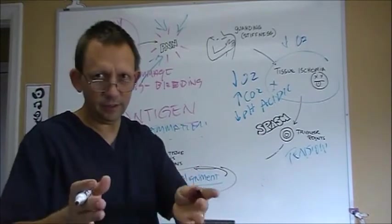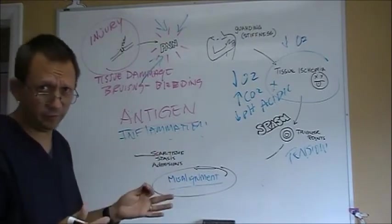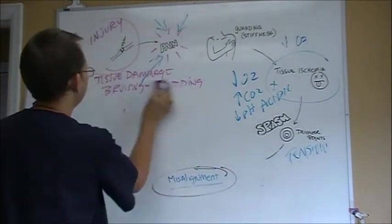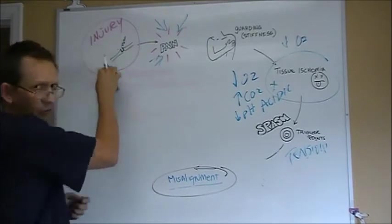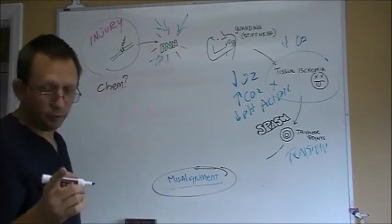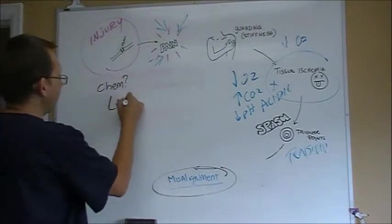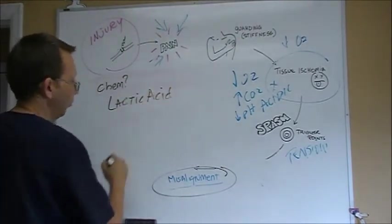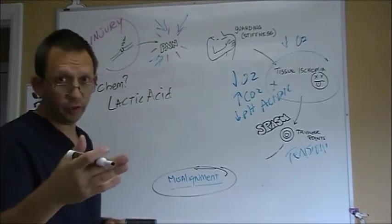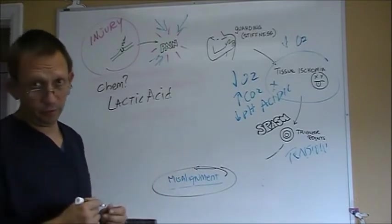Now, this is just the main basic of the pain spasm cycle. So we have to take into consideration some other points. Here we have physical injury. What if we have chemical injury? Chemical injury would be either lactic acid buildup from overuse or misuse. Lactic acid is the normal buildup of an acid because you've used your sugars in the mitochondria and the muscles too long without oxygen. It's called anaerobic buildup of lactic acid.